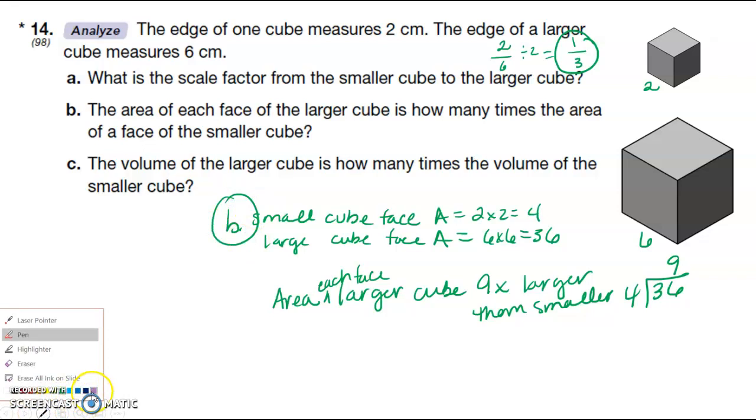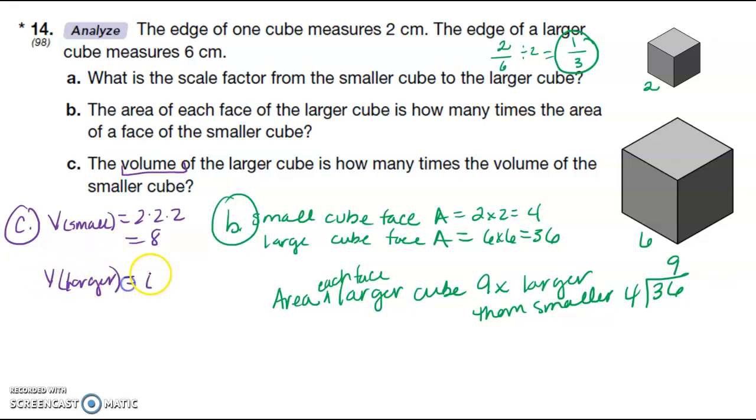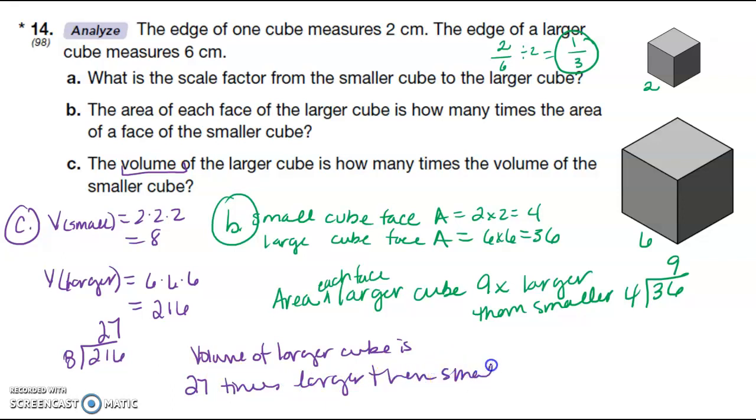The volume of the larger cube is how many times the volume? Volume of the smaller cube is 2 times 2 times 2, which is 8. Volume of the larger cube is 6 times 6 times 6, which is 216. So if I divide 216 by 8, I get 27. So the volume of the larger cube is 27 times larger than small cube.